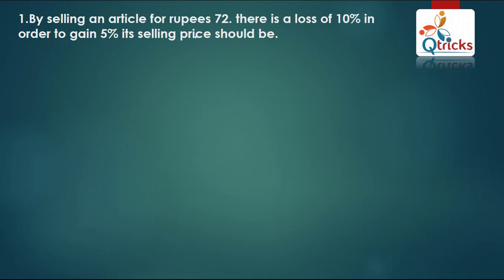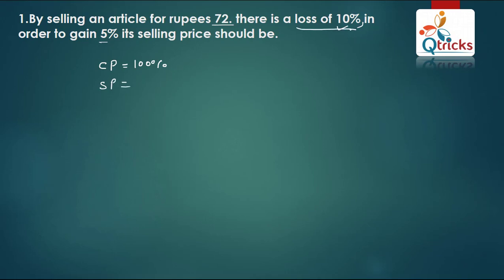The first question is: By selling an article for Rs. 72, there is a loss of 10%. In order to gain 5%, what should the selling price be? The cost price is always 100%. There is a 10% loss, so SP equals 90%. The SP value is 72, meaning 90% equals 72. So you can find the cost price: 72 ÷ 90 × 100 = 80. The cost price is Rs. 80.